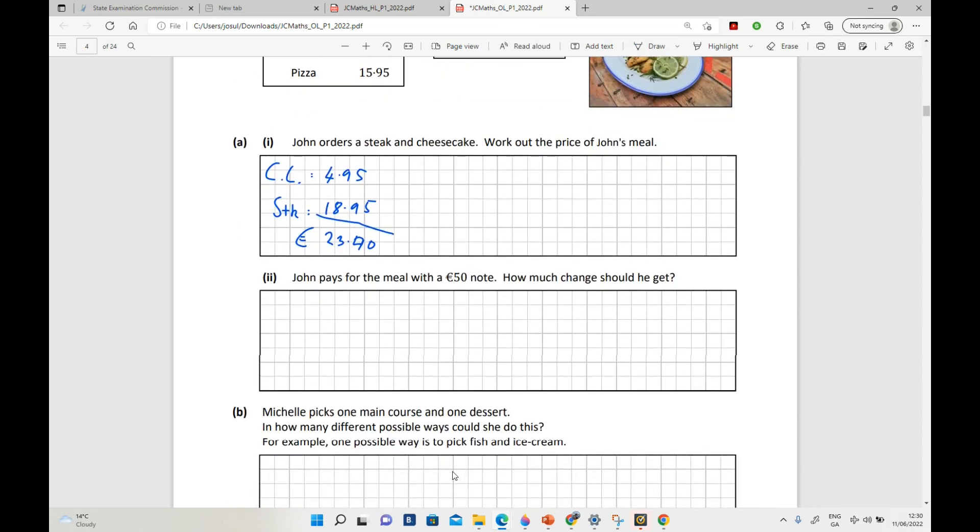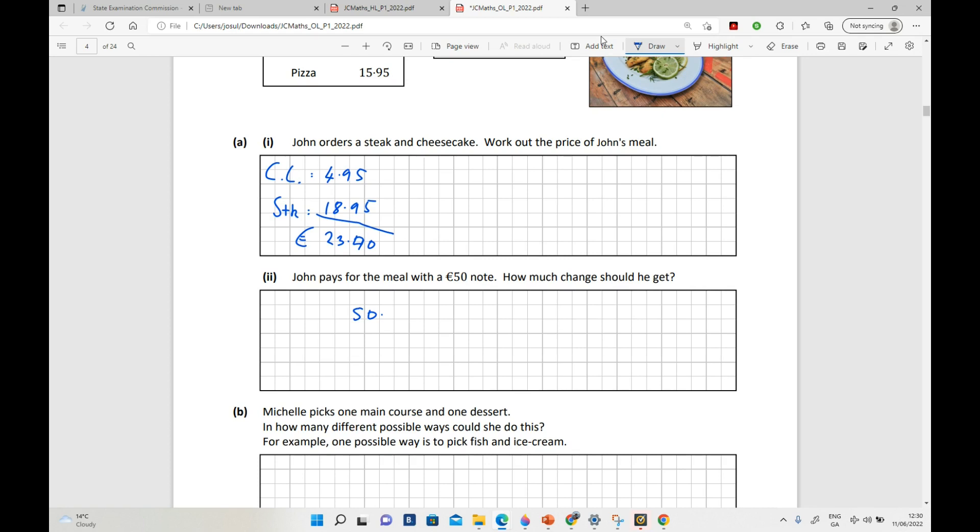Now John pays for the meal with a 50 euro note, how much change should he get? So simple subtraction. So you put down your 50 euro, put down your 23.90 which is what John paid. So what is he going to get back?